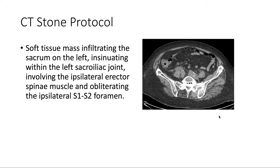There's also a soft tissue mass infiltrating the sacrum on the left. It's within the left sacroiliac joint, involving the ipsilateral erector spinae muscle. At the level of S1-S2, it obliterates the foramen.